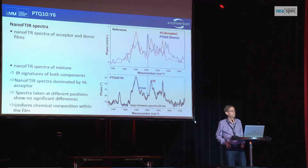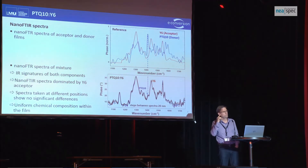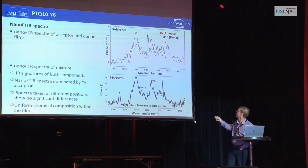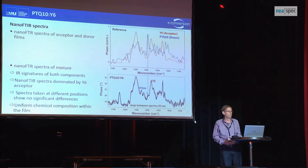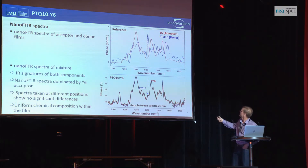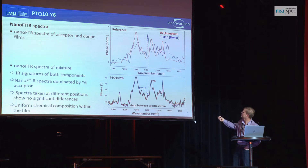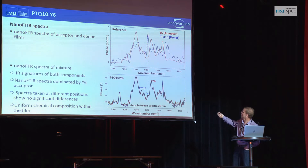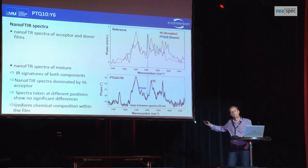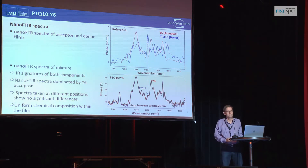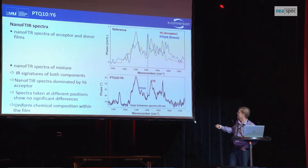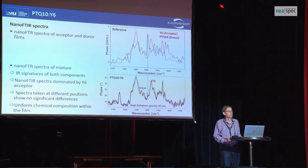Now let's do spectroscopy. We first took reference spectra from the individual donor and the acceptor — shown here in red and blue. We then looked at the nano FTIR spectrum of the blend. The red is the acceptor, which dominates the IR response — you can clearly see its peaks, that's the Y6. The donor has a much smaller contribution, leading to an additional peak on the side, such that we can say both donor and acceptor are visible in the nano FTIR spectrum, but they are clearly dominated by the Y6 acceptor contribution.